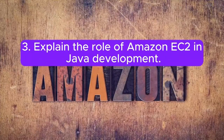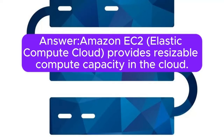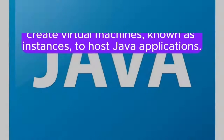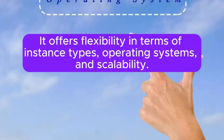Question 3: Explain the role of Amazon EC2 in Java development. Amazon EC2 Elastic Compute Cloud provides resizable compute capacity in the cloud. Java developers can use EC2 to create virtual machines, known as instances, to host Java applications. It offers flexibility in terms of instance types, operating systems, and scalability.